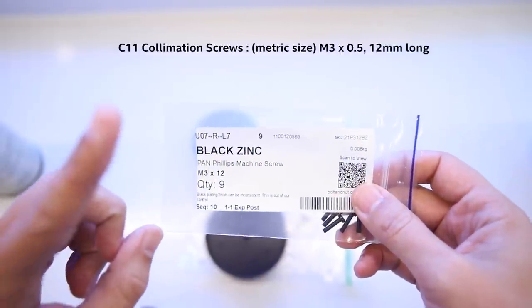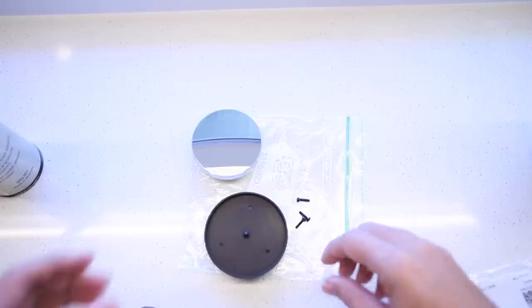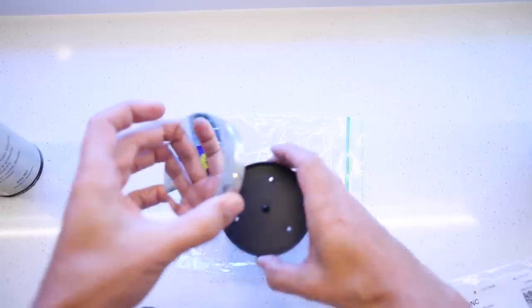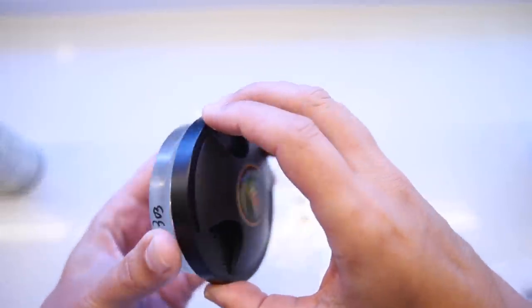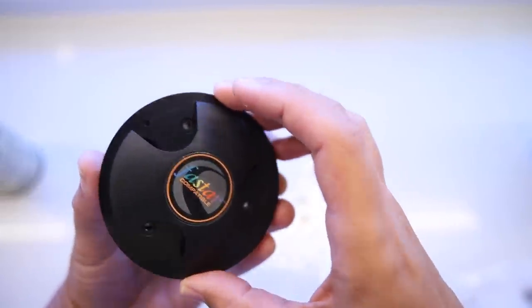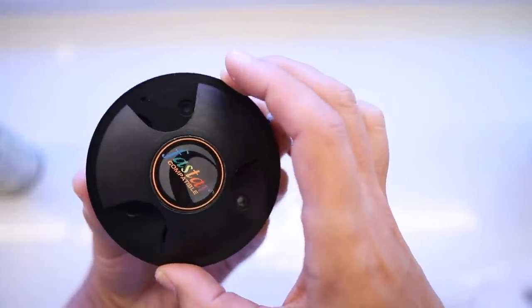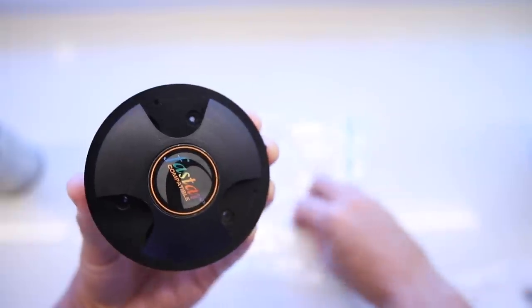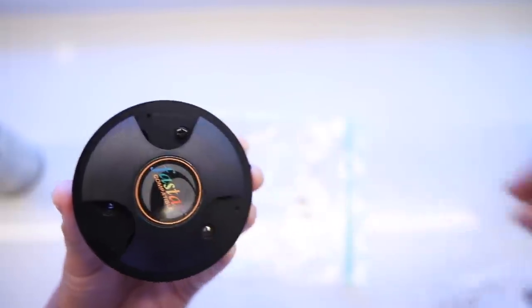So I asked Celestron for the part number, M5 0.5 thread—I can't remember, I'll put it up here. That's what you need to get. And then I thought, well, if I'm going to do that, I'm just going to replace all the screws at the same time. So putting the assembly back together, we're going to find the holes here and screw it back up. And we're going to screw it back up with fresh screws.